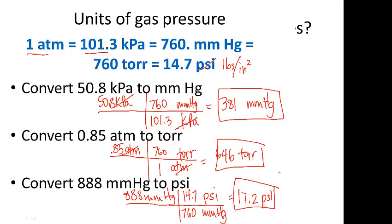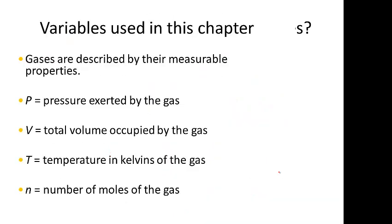Finally, in this chapter we will have a bunch of different variables and you need to be familiar with the letters that are used for each. So we'll have P for pressure, V for volume, T for temperature, and notice that it must be in kelvins. And then n is going to represent the number of moles of gas.